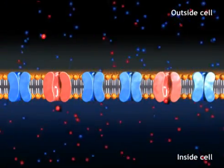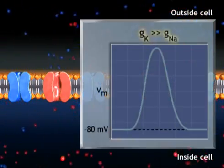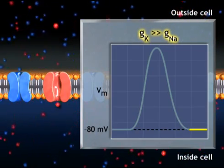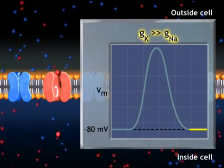Finally, the resting state is restored. Potassium conductance is greater than sodium conductance and the membrane potential equals the potassium equilibrium potential.